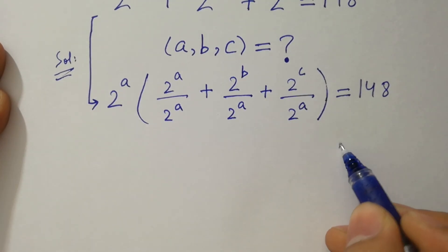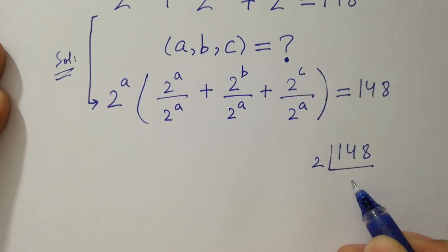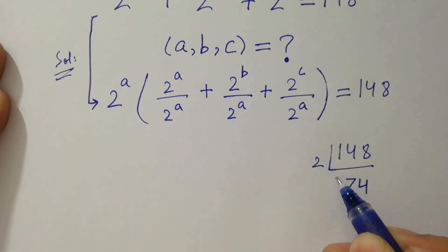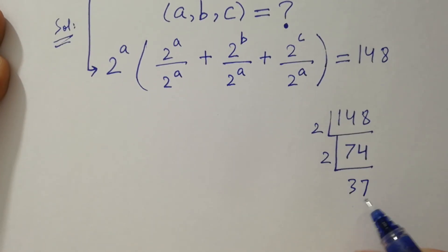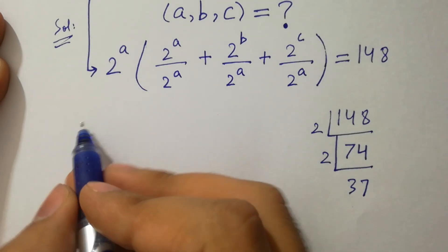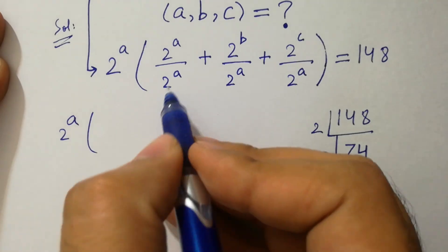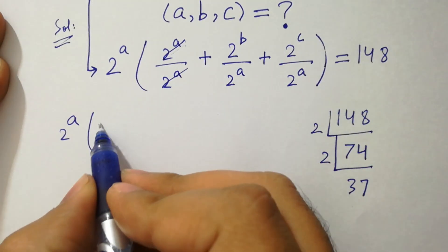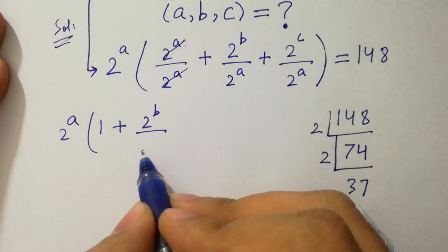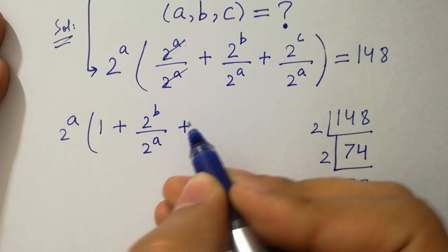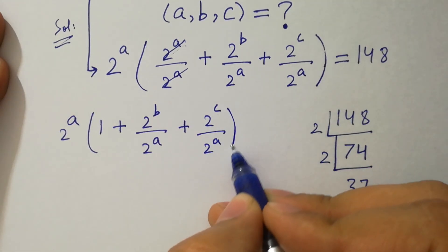Here, 148 divided by 2 is 74. 74 divided by 2 is 37. So we have 2 to the power a times the quantity 1 plus 2 to the power b over 2 to the power a plus 2 to the power c over 2 to the power a, equal to some value.